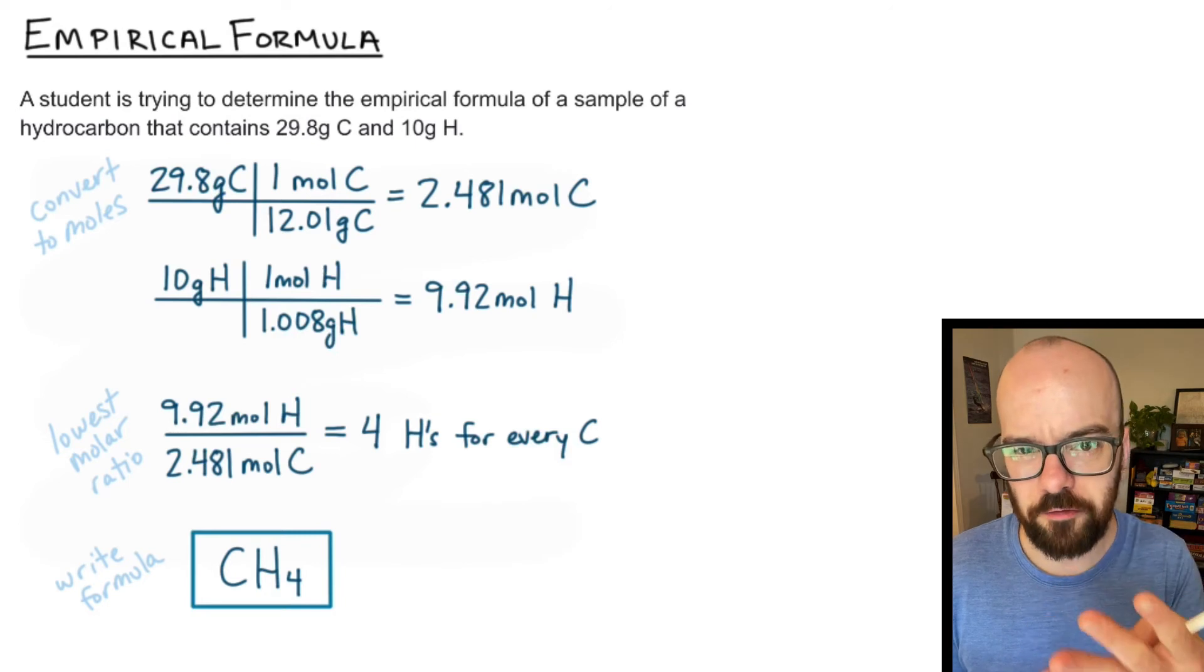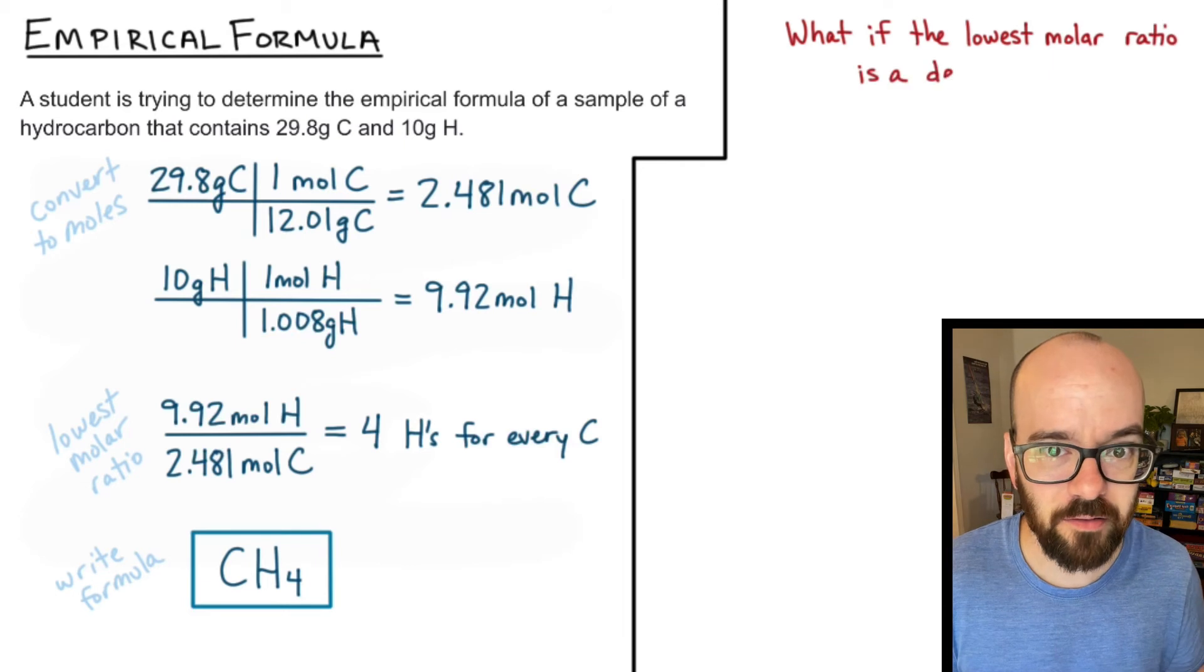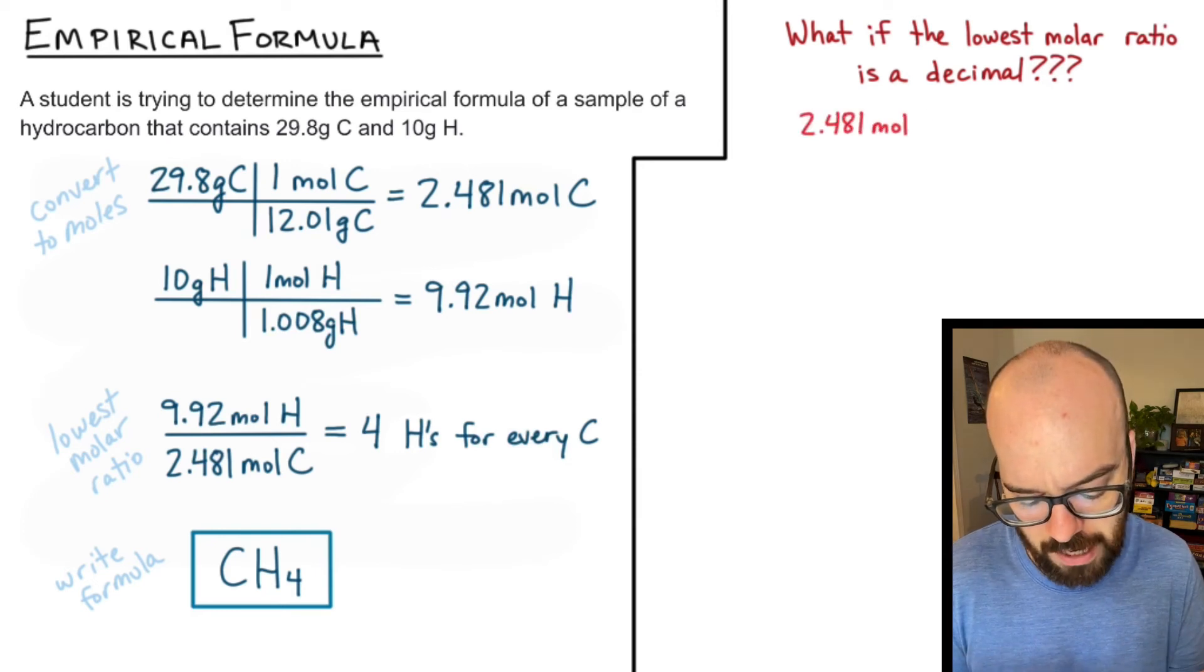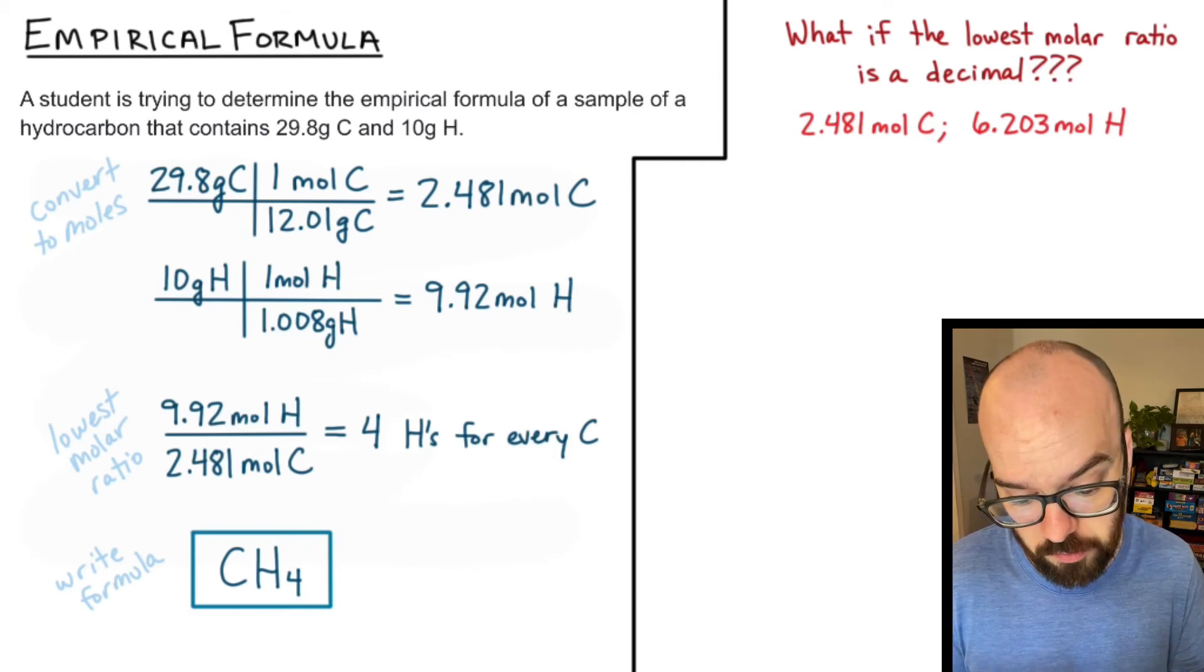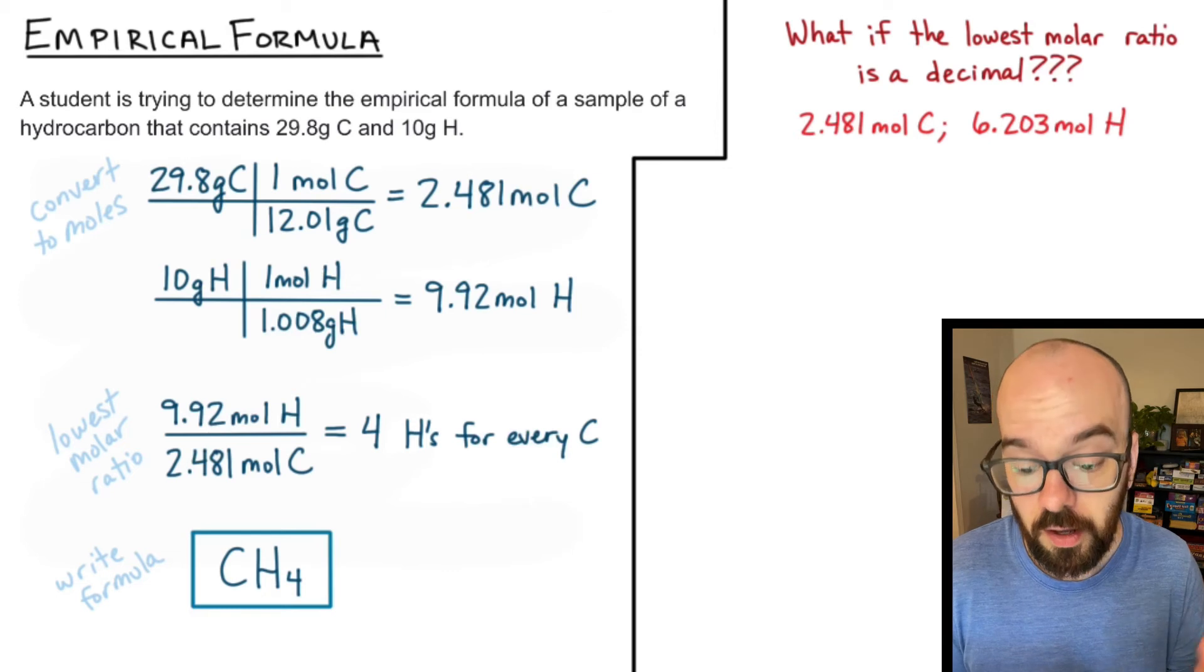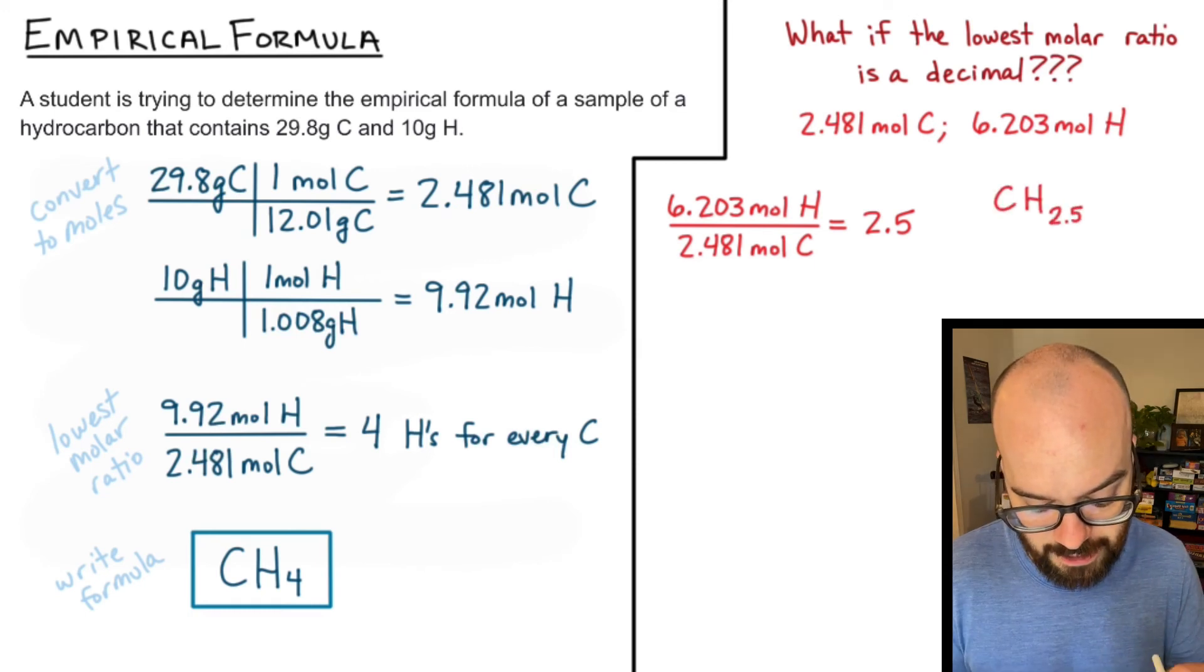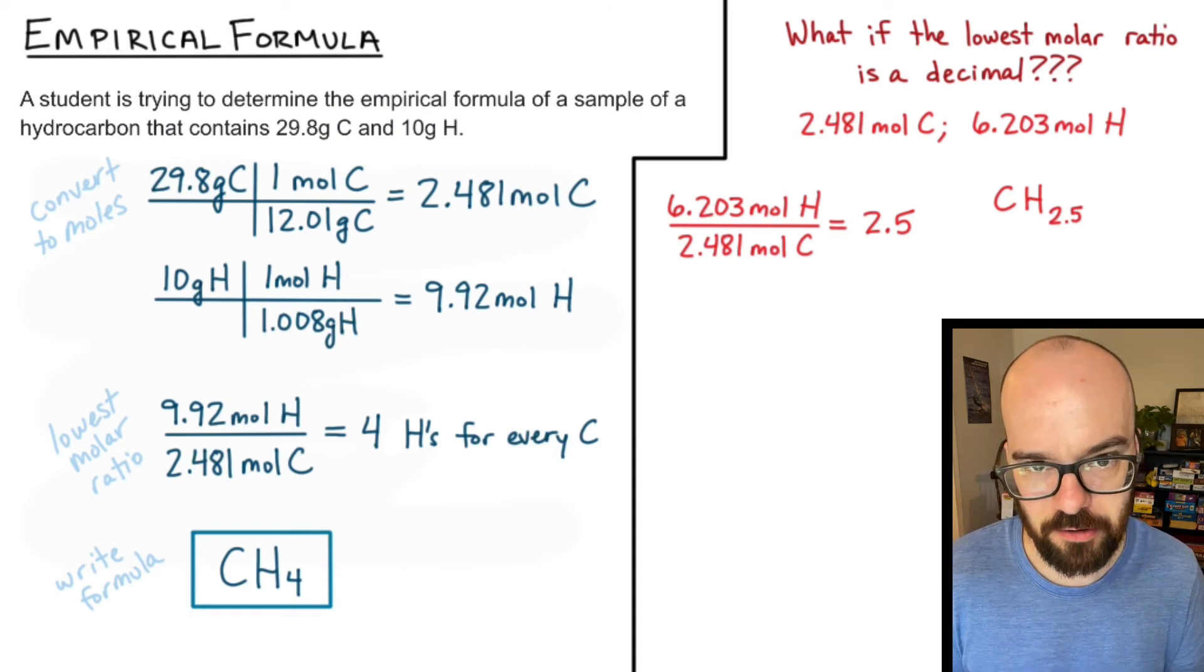Now what if instead of getting right at four we got something like 4.5, something that we can't just round to four or round to five? In other words what if the lowest molar ratio is a decimal? Let's say that we did a problem that was pretty much the same but whenever we calculated our moles of carbon and hydrogen we got this 2.481 moles of carbon still but we had 6.203 moles of hydrogen. So far so good. I would take the 2.481 divided into the 6.203 but in this case I get 2.5. Do you see the problem? I would get CH2.5 but I can't have two and a half hydrogens. I can't have half of an atom.